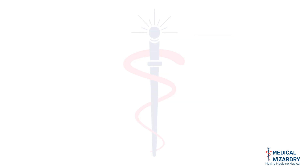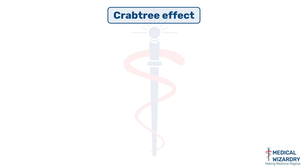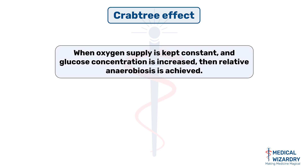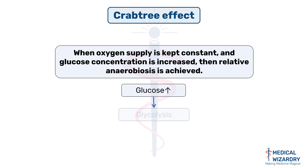Last but not the least, the Crabtree effect. It says that when oxygen supply is kept constant and glucose concentration is increased, then relative anaerobiosis is achieved. In other words, when glucose is more in the presence of O2, the O2 consumption by the cells is reduced. When more glucose is present, glycolysis takes place and sufficient ATP is produced — hence there is no need for the cells to consume more O2.